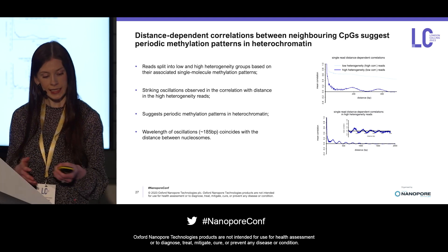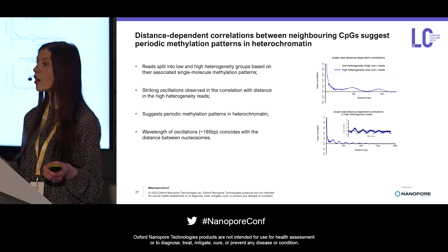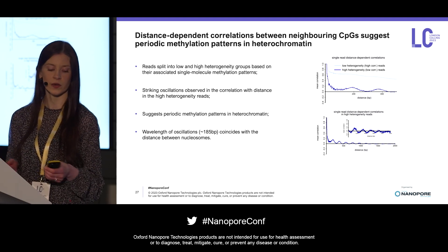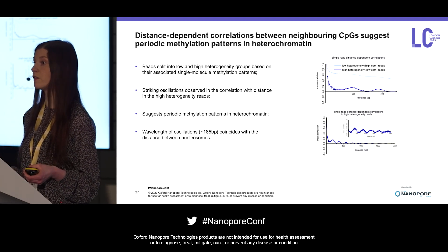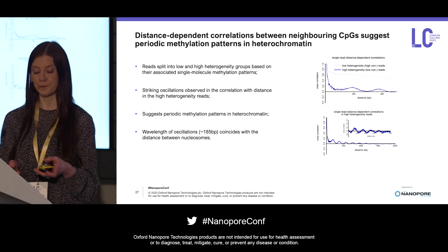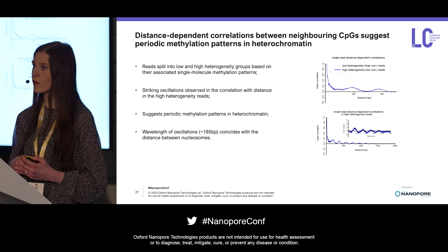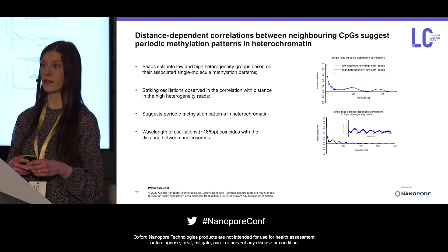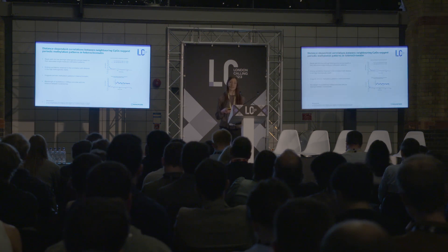When it comes to what's actually generating these oscillations, we think nucleosomes are most likely the cause, because the wavelength of the oscillations we observe is about 185 base pairs, roughly coinciding with known distances between nucleosomes. I have done some mathematical modelling which has provided evidence in favour of nucleosomes interacting with DNA being capable of generating the type of patterning we see here. In summary, the most disordered and heterogeneous methylation patterns are found in heterochromatin and partially methylated domains, these patterns tend to have an underlying periodicity, and this periodicity is likely generated by nucleosomes.